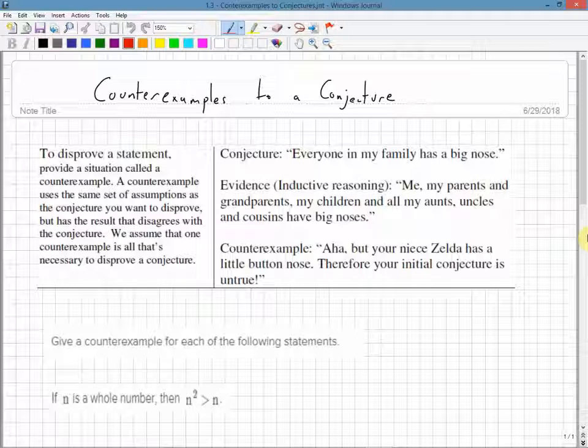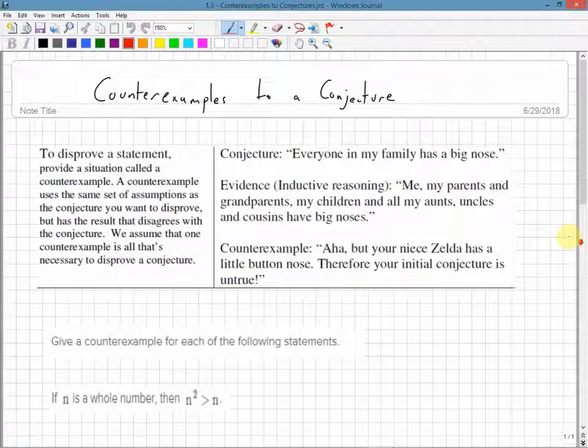But the counterexample could be: Aha, but your niece Zelda has a little button nose. Therefore, your initial conjecture is untrue. So you've found one counterexample. Let's look at some examples giving a counterexample for each of the following statements.